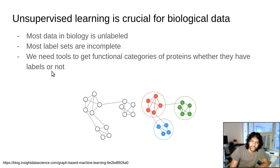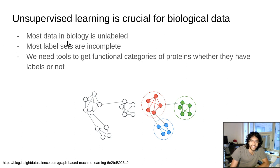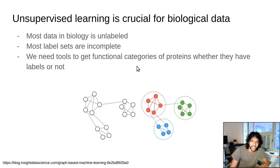The first thing I want to say is that unsupervised learning is very important for biological data. This is because the data is often unlabeled and the label sets are generally incomplete, and we want to get tools for detecting functional categories of proteins, regardless of whether or not they have labels.